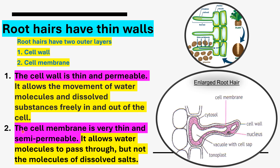The cell membrane is very thin and semi-permeable. What are the characteristic features of the cell membrane in root hairs? The cell membrane is very thin and semi-permeable. Semi-permeable means it allows water molecules to pass through but not the molecules of dissolved salts. Here you can see the structure of a root hair: the outermost layer is the cell wall, and next to it is the cell membrane.